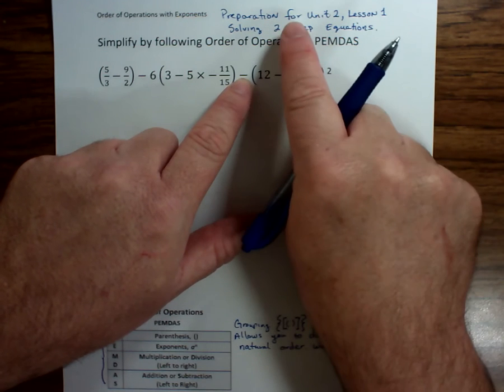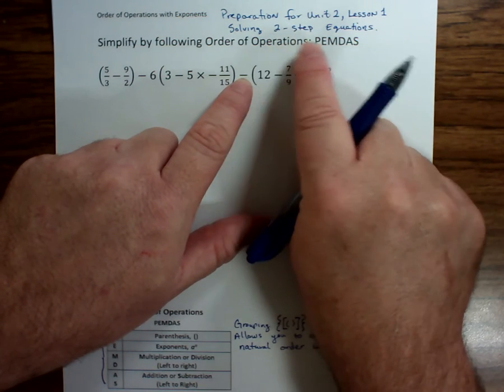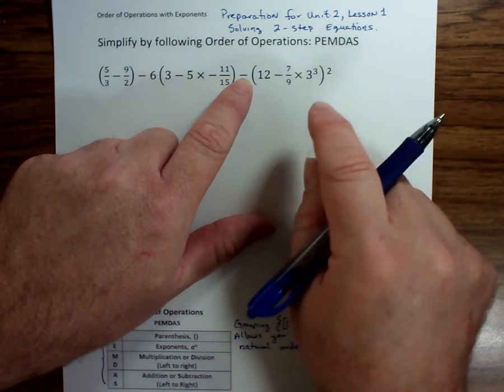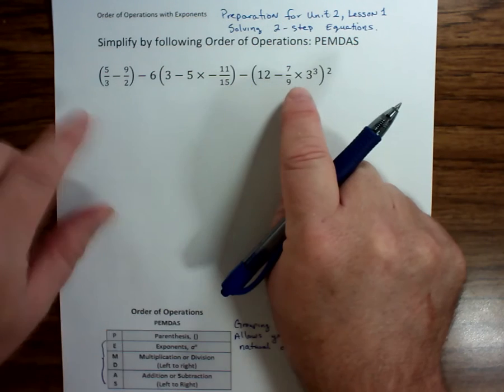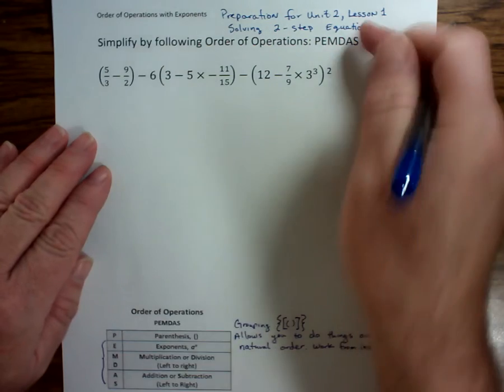Now all this is in preparation for Unit 2, Lesson 1, where we're going to be solving two-step equations, and we need to understand how to do order of operations to successfully navigate solving problems.